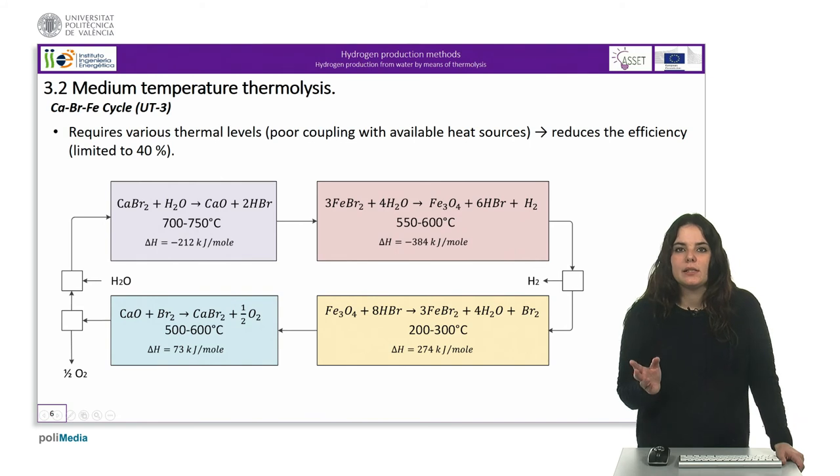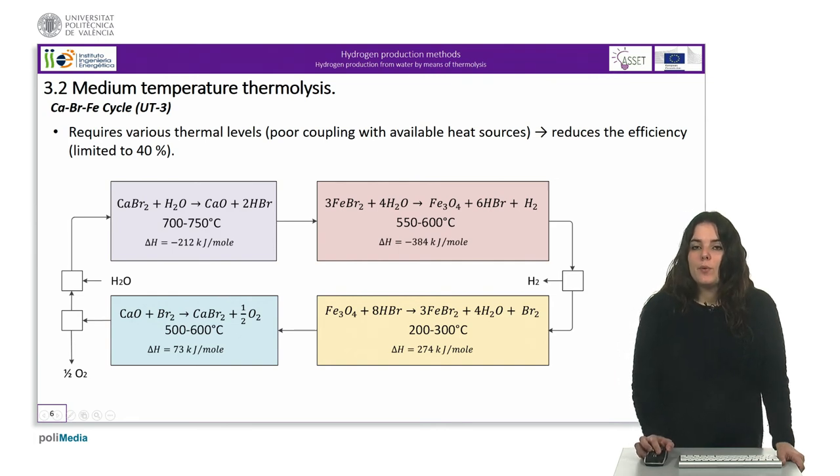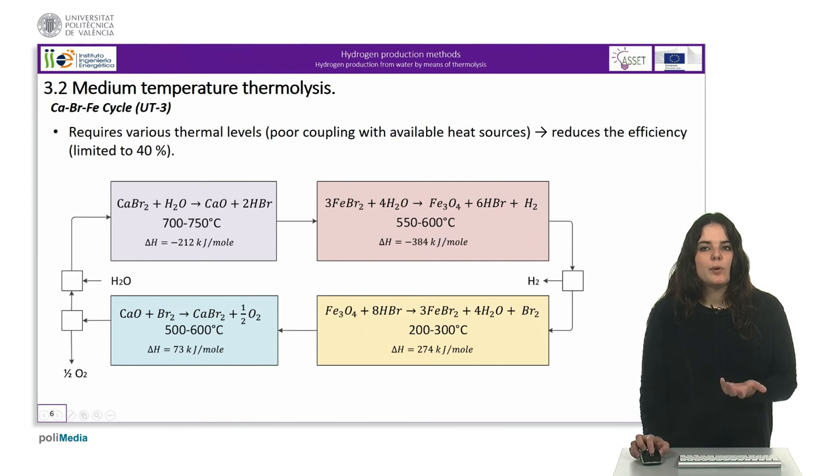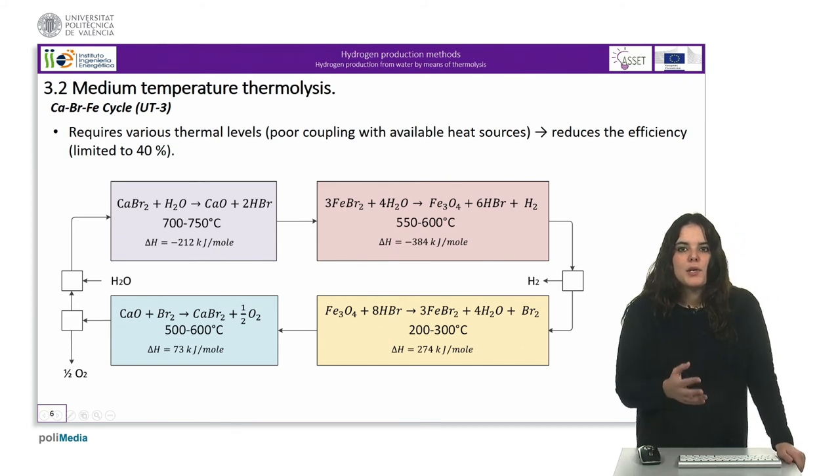The other process, the UT-3 cycle, also requires various thermal levels with a maximum of 750°C. This intermediate thermal level causes poor coupling with available heat sources, for example with high temperature nuclear reactors, resulting in a loss in efficiency. Despite this, nuclear energy sources and solar heat energy can be used as heat sources for this cycle.